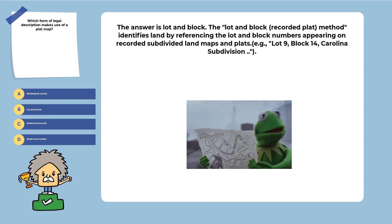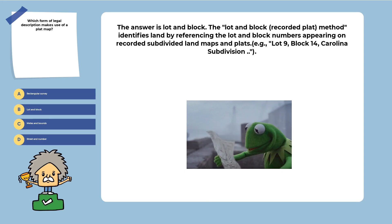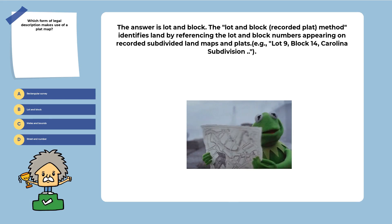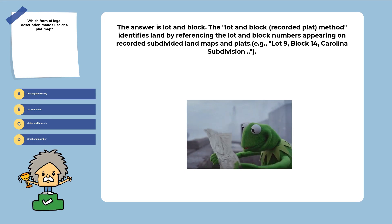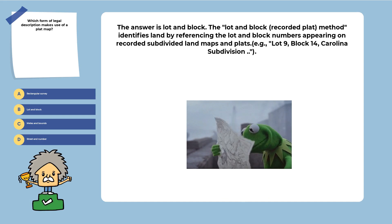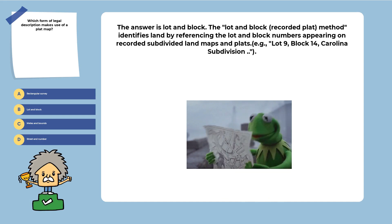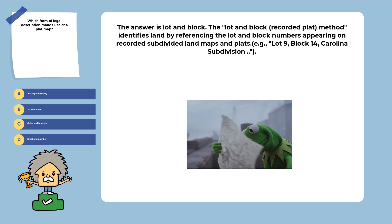Explanation: The answer is lot and block. The lot and block method identifies land by referencing the lot and block numbers appearing on recorded subdivided land maps and plats.